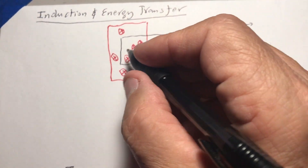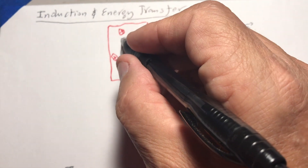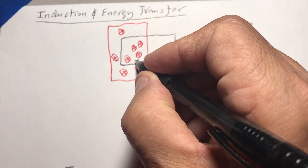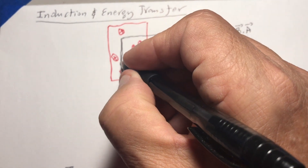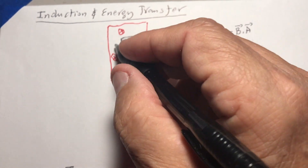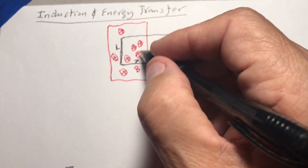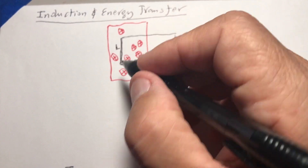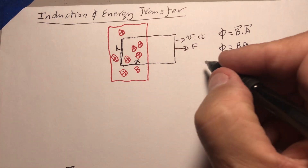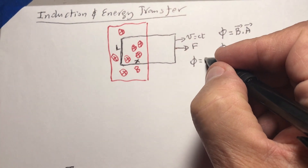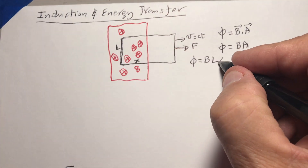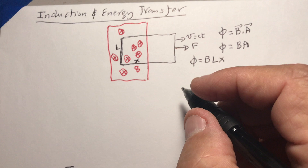Looking at just the region inside the loop where there is a magnetic field, I call this distance x and this length l. So the flux is equal to B times l times x — that is the flux in the region of the magnetic field.